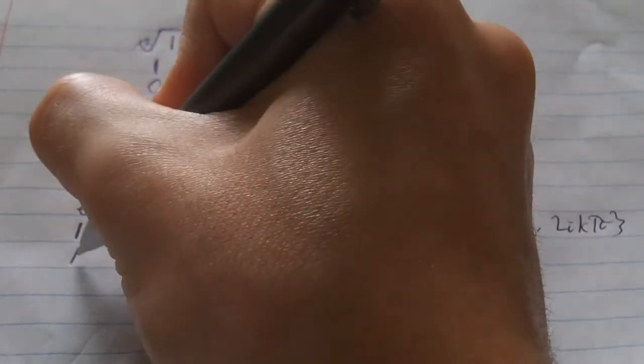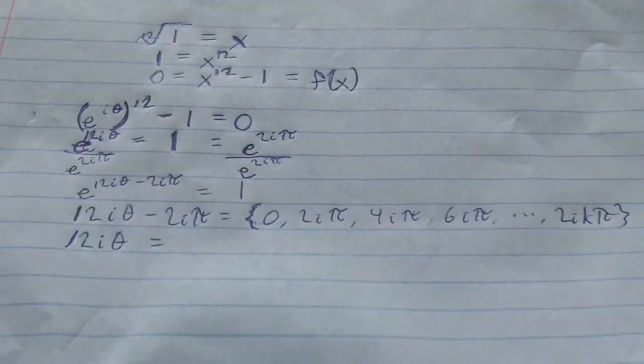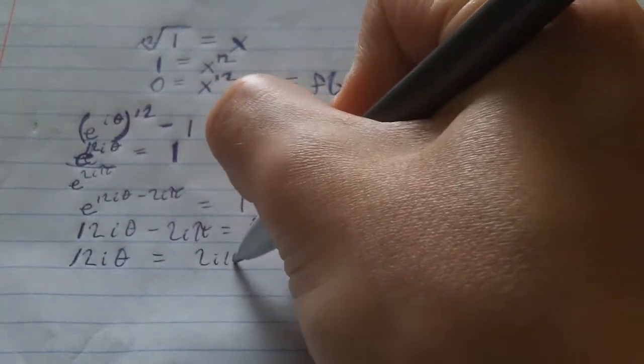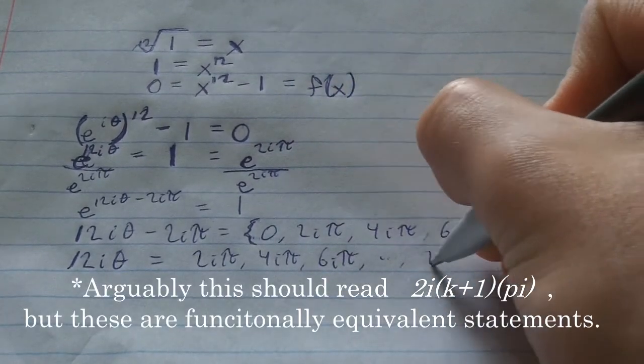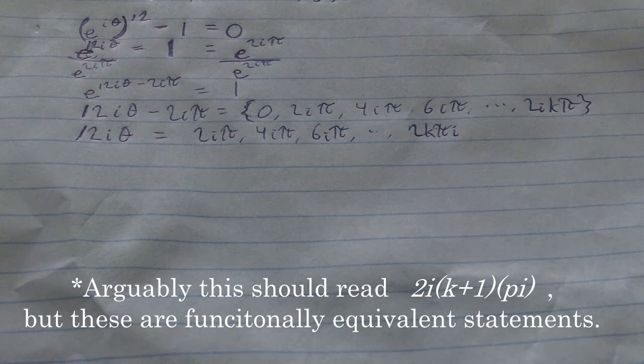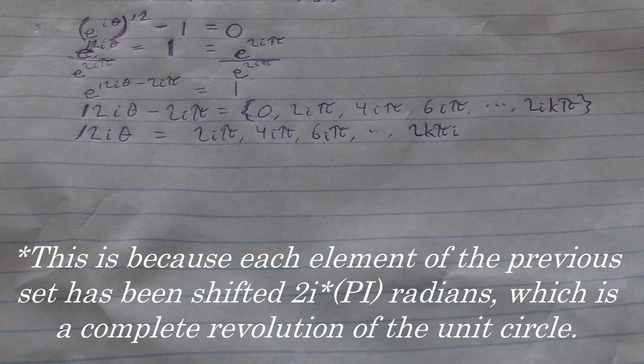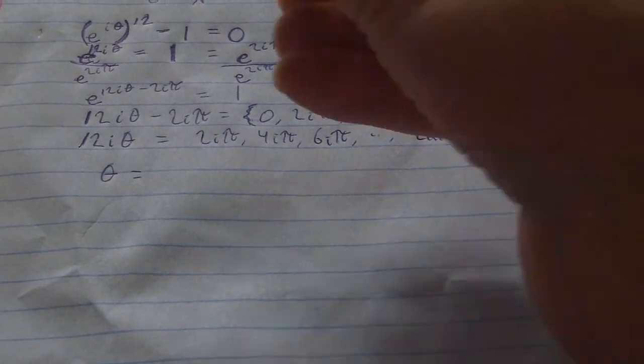And we basically, since we're trying to find out what theta is, we say twelve i theta, and then we can essentially add two i pi to each of these particular solutions. So, we really get two i pi, four i pi, six i pi, etc. And if you think about it, that's really just the same kind of set of solutions, essentially. Basically, to each of these solutions, I propose that in order to find theta, we simply divide each term by twelve i, which is actually a lot simpler than you may think. Two i pi divided by twelve i is, believe it or not, simply pi over six.